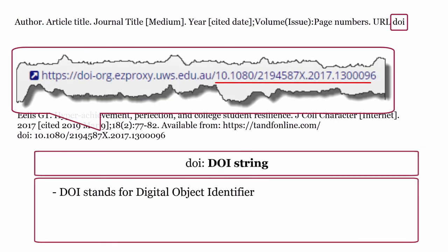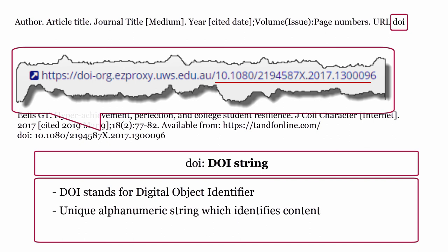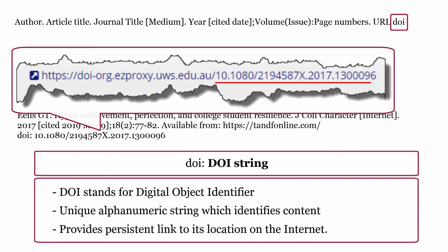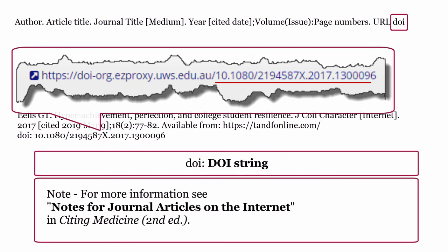DOI: this stands for digital object identifier, which is a unique alphanumeric string which identifies content and provides a persistent link to its location on the internet. Only include the DOI if it is available. The DOI is formatted using 'doi' in lowercase, a colon, then the DOI string. For more information, see Notes for Journal Articles on the Internet in Citing Medicine, second edition.